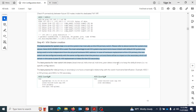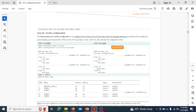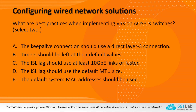For inter-switch link timers, keep the default timers. For VLAN configuration, the best practice is to configure with the VSX-sync command, so the secondary will get VLAN configuration synchronized with the primary. Now let's look at the answers. Option A: the keepalive connection should use a direct Layer 3 connection — yes, keepalive is a Layer 3 direct connection between two switches, so it is correct.